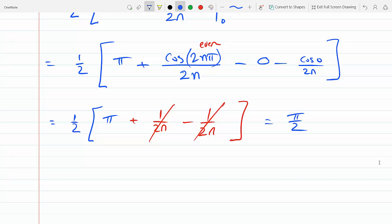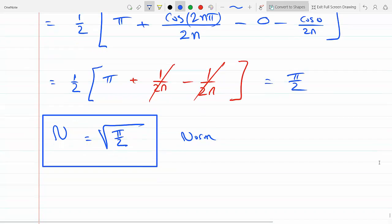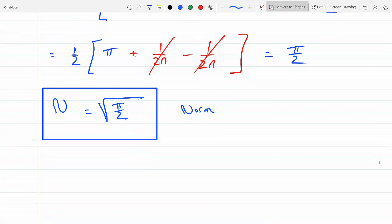And we will get pi over 2, and therefore the norm of this is square root of pi over 2. This is the square root of pi over 2. This is the norm. So then it says state the normalized function.